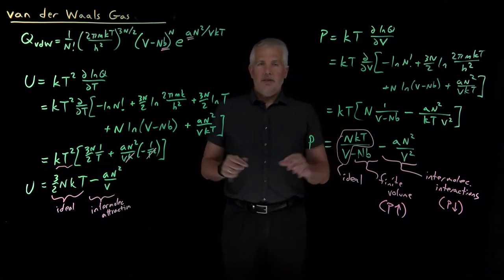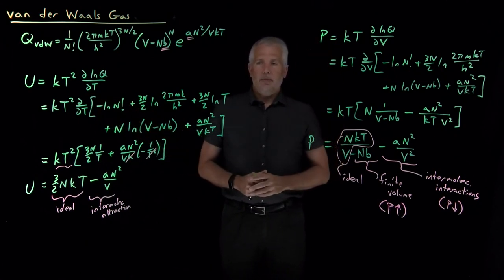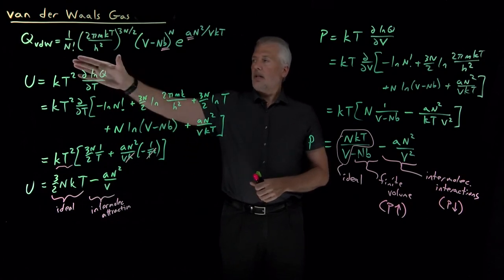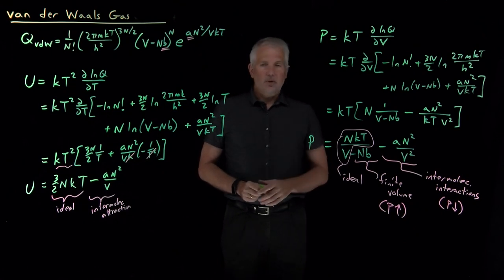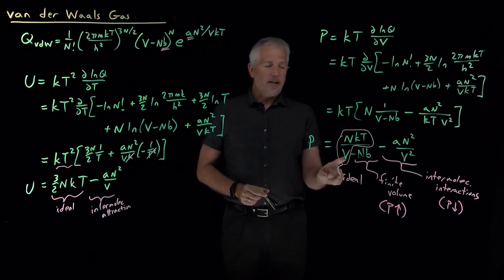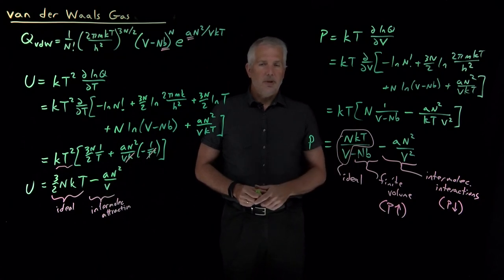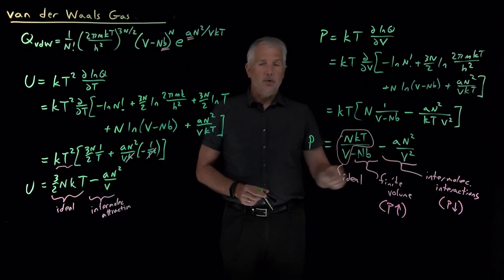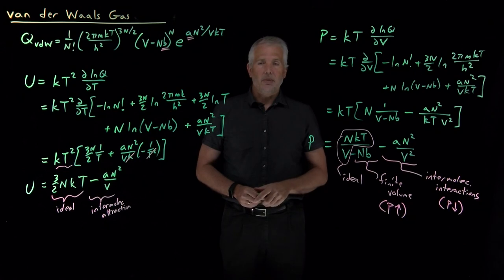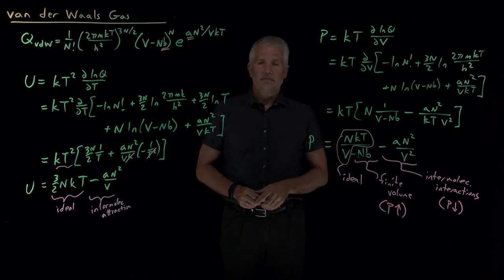That shows us how to calculate two thermodynamic properties — energy and pressure — from the partition function for the van der Waals model. What we're most interested in is the relationship between pressure, volume, and temperature, which we call the van der Waals equation of state. We'll spend more time discussing that relationship next time.